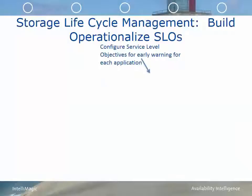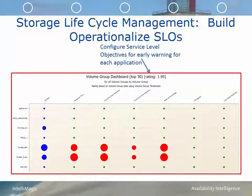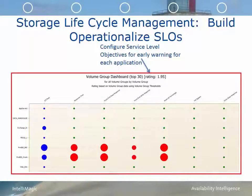During the build phase, it's important to operationalize the service level objectives agreed upon with the vendor during the RFP phase. You want to configure service level objectives for early warning for each application. In this example, I'm showing what's called a volume group dashboard — a collection of volumes associated with different applications — showing key performance indicators: response time, read response time, write response time, read hit percentage, fast rate bypasses, and back-end drive read response time. We can see very clearly that the proddb_db2 and proddb_oracle applications are having higher than expected response time.